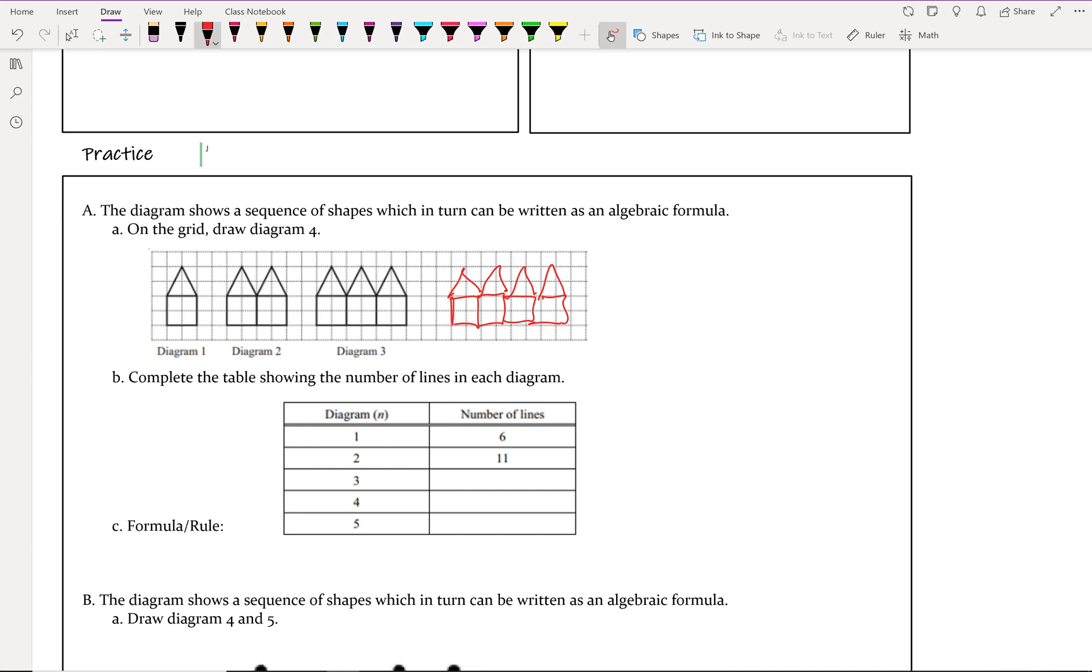Complete the table below showing the number of lines in each diagram. We're also going to talk about a formula or a rule. What is the change here each time? In diagram one, we have six lines - one, two, three, four for each side of the square, and then two for the triangle that's created on top.